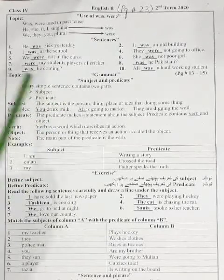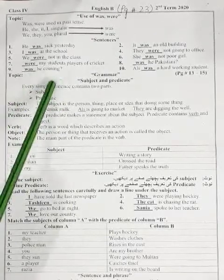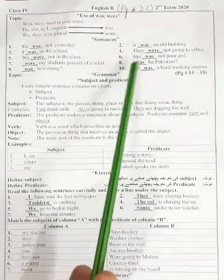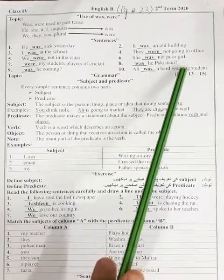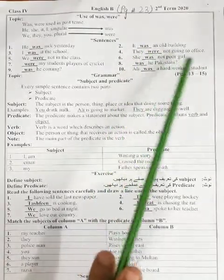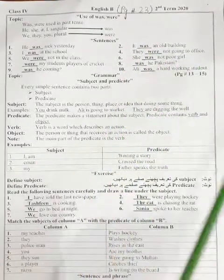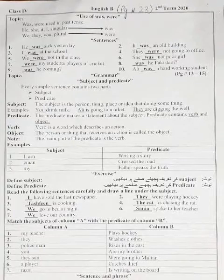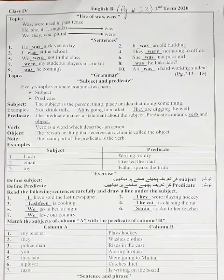Was he coming? ٹھیک ہے؟ جیسے 'She was not a poor girl.' 'They were not going to office.' بچوں سمجھ آگئی — 'was' کہاں use کریں گے اور 'were' کہاں use کریں گے۔